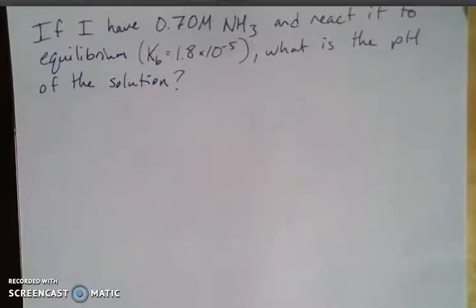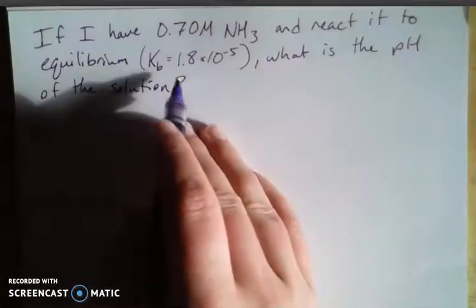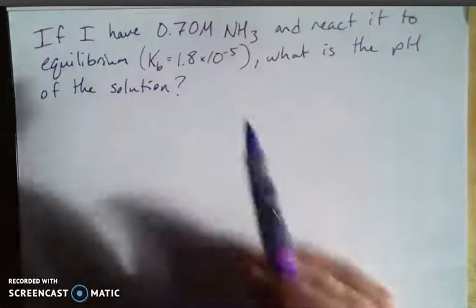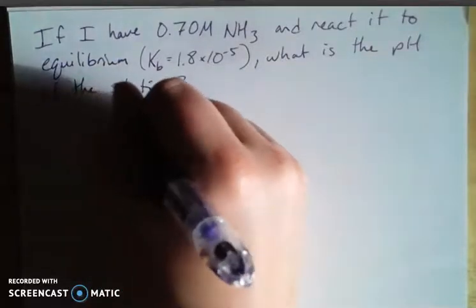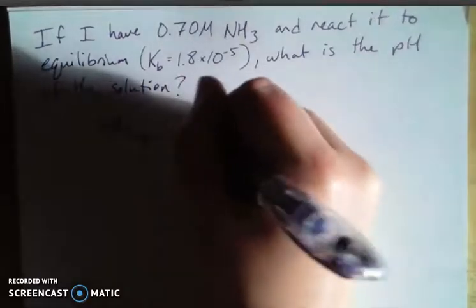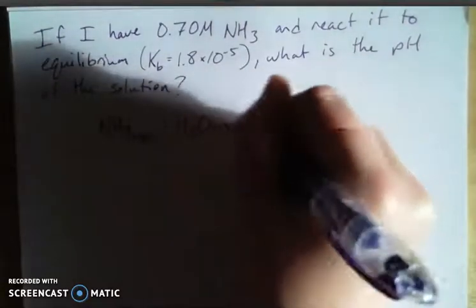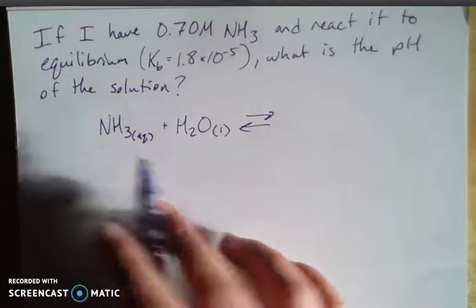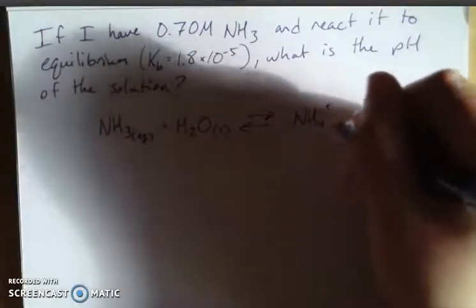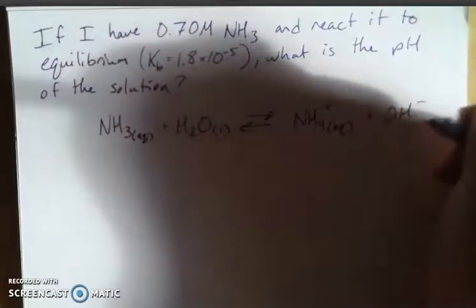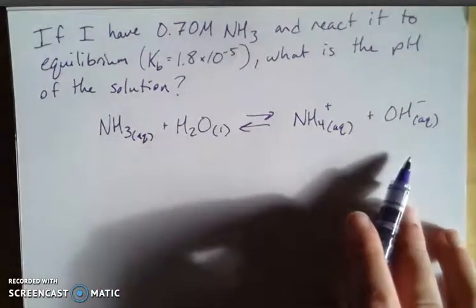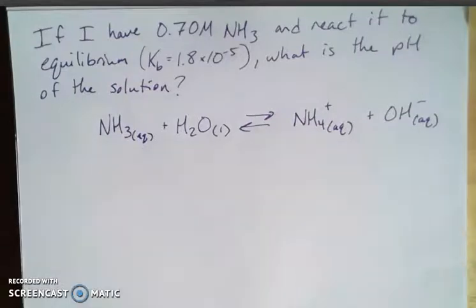If I have a weak base like ammonia, that's my NH3 here, and I react it to equilibrium, here's the Kb that's given. That Kb is pretty small, which means that my denominator is much larger than my numerator. If I write out my equation, I have ammonia that's reacting with water. And when the water lyses, when it does this hydrolysis, then one of the hydrogens is going to tack on to my ammonia here, giving me the ammonium cation, and I'll have a hydroxide left in solution, which is what makes ammonia basic, that hydroxide in solution. So we want to know what the pH is of this process.